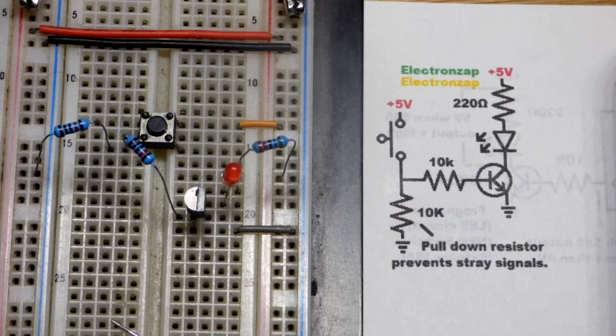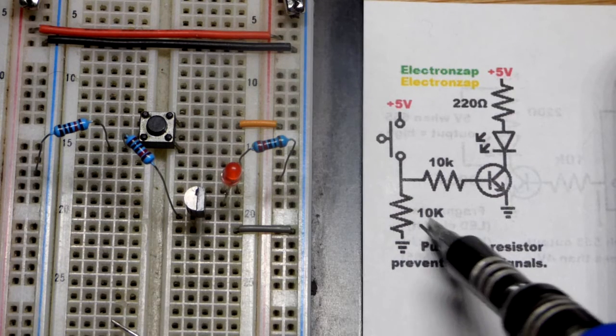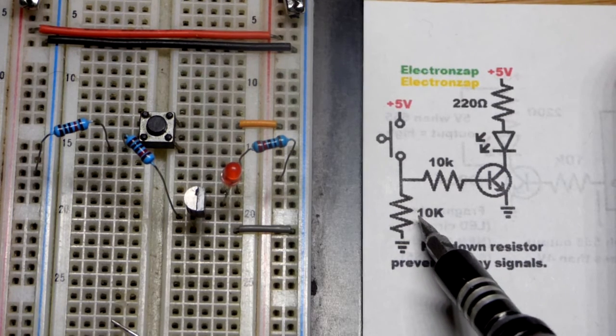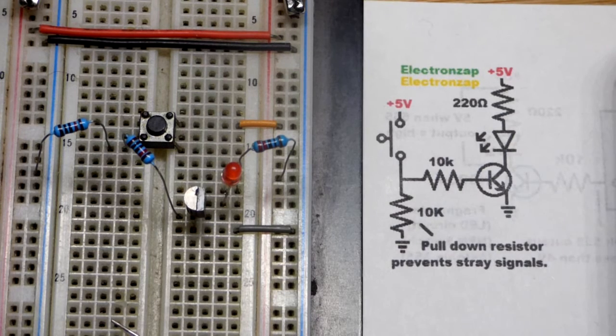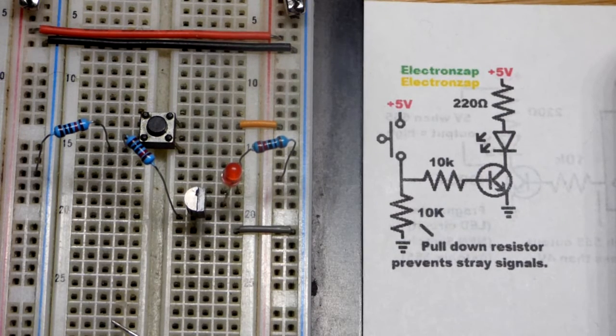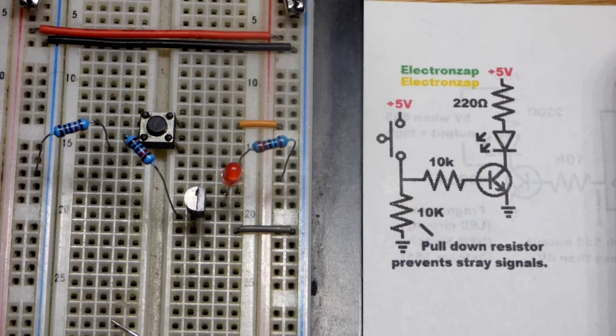But, we're not going to worry about that in this video. Just, you'll see these pull-up or pull-down resistors from time to time. They're not really doing something other than preventing a charge that you don't want at a pin at any given time. And, so, they're very useful. They are doing something, but not something that you can really see or detect. Hopefully, that makes sense.